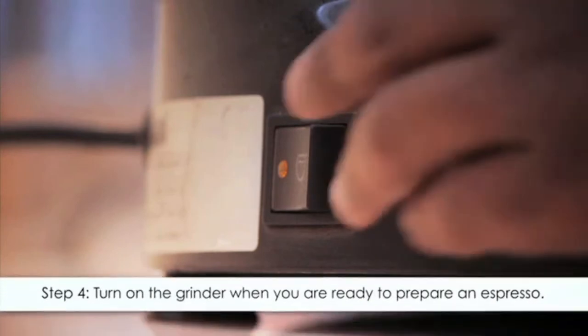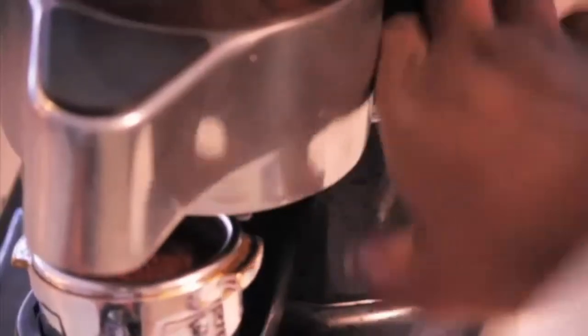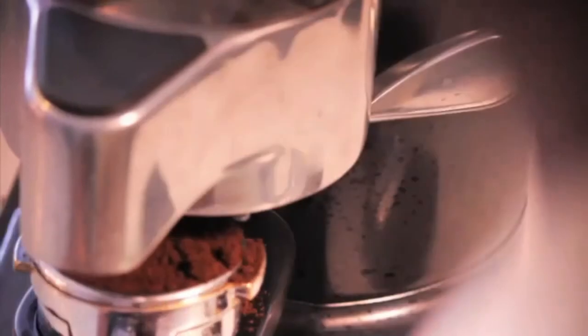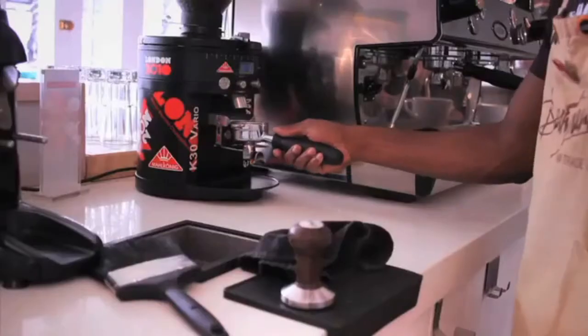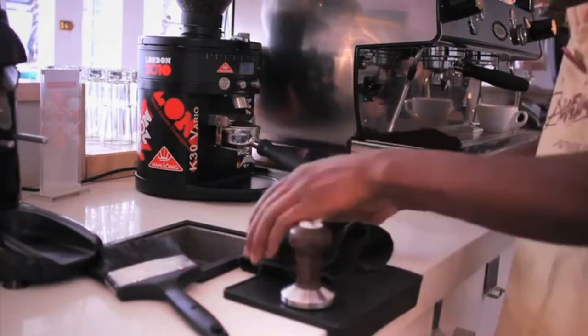Step four: turn on the grinder when you are ready to prepare an espresso. Please note that if you are using a manual blade grinder, then remember to use short bursts of a few seconds each so that the coffee does not overheat. If you are using the burr grinder, place the coffee beans in and allow for the burr grinder to accurately grind.